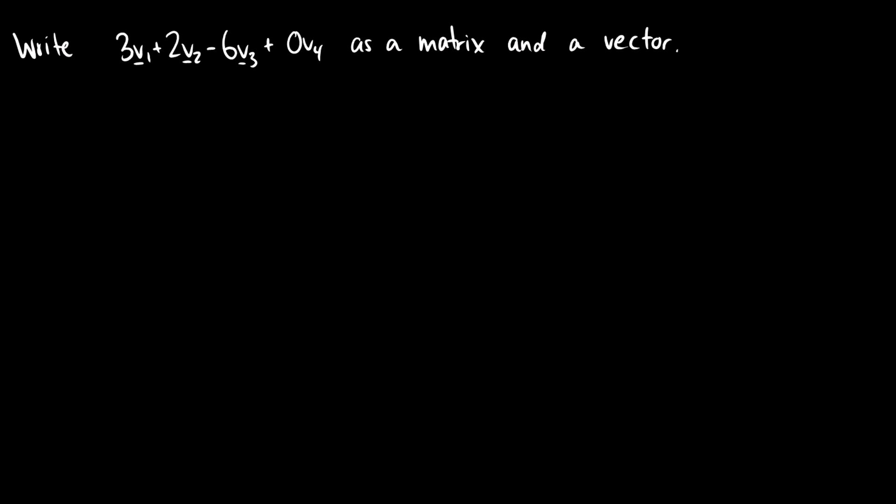Well, this is just basically x1a1 plus x2a2 plus x3a3 plus x4a4. And this is the same thing as a times a vector x. So I think we know how to put this into a proper notation.